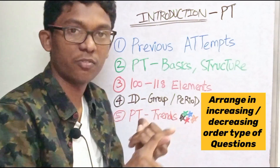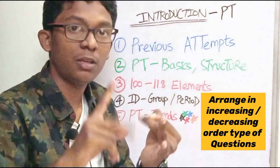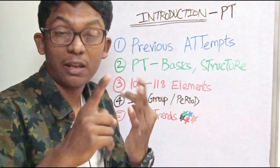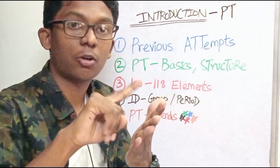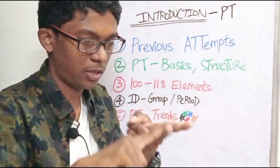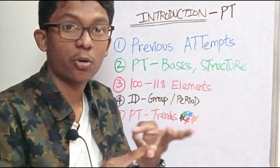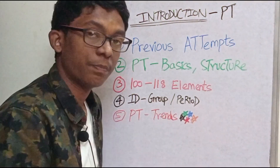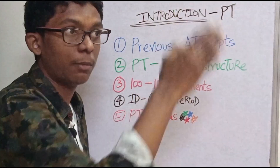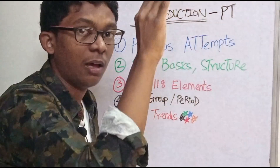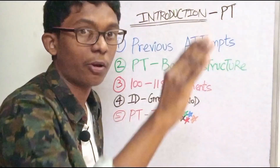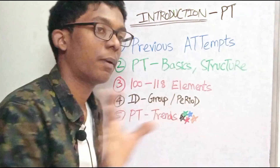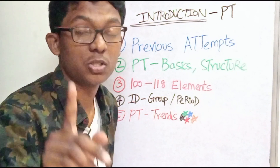This covers electron affinity, electron gain enthalpy, ionization enthalpy, ionization potential, atomic size, atomic radii, ionic radii, and electronegativity. All of these trends in the periodic table — along the group, along the period — can be seen, including exceptions.